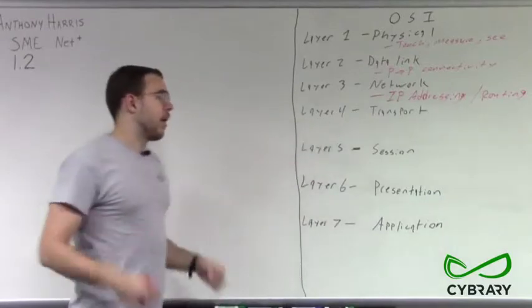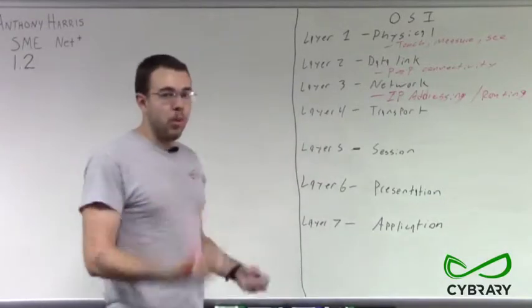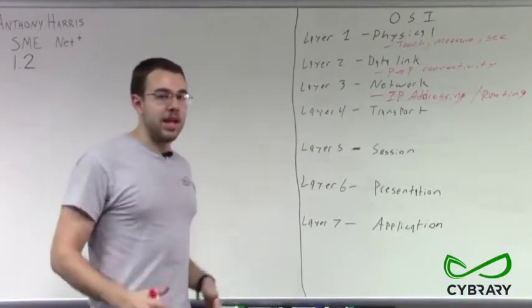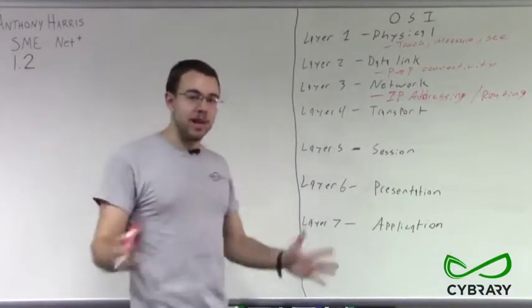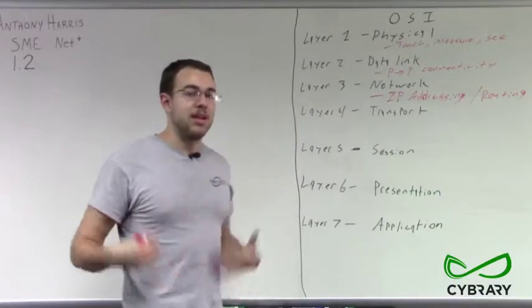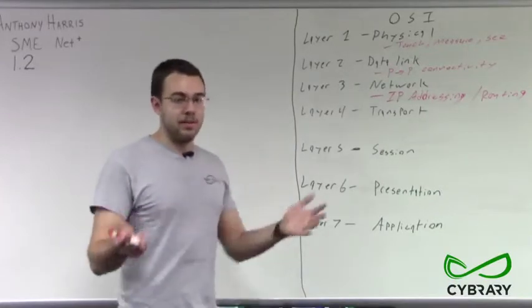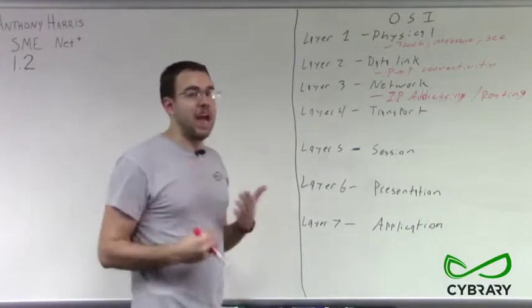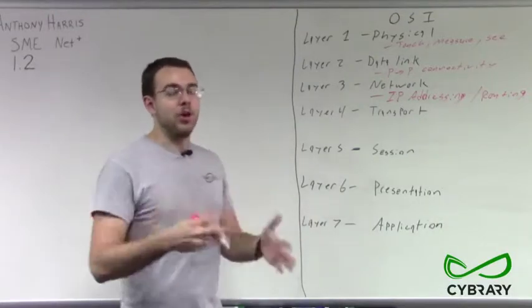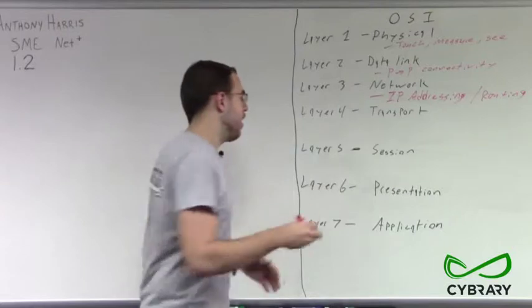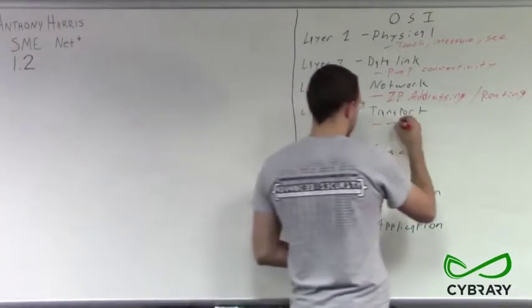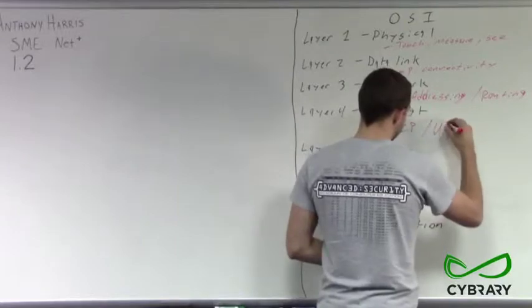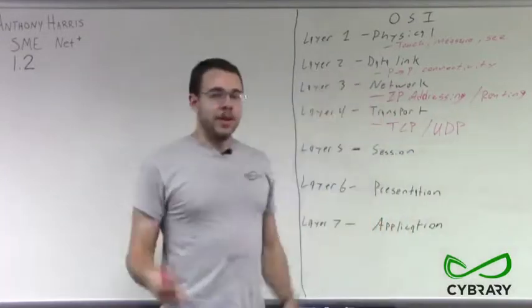Now we have our layer four. Our layer four, our transport, we talked about helps manage and control how our data is being segmented up, how our data is being sent, making sure that our data is getting there if it needs a receipt back that it's got there, and essentially just managing how we're pushing our data to our endpoint. And our transport is mainly going to be our TCP slash UDP for management and sending of our data.